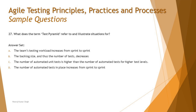Option B says: the backlog size and number of tests decreases. That also has nothing to do with the test pyramid — the concept does not say backlog size is defined by the pyramid or that test numbers decrease. Option C says: the number of automated unit tests is higher than the number of automated tests for higher test levels, which is exactly what the test pyramid represents.